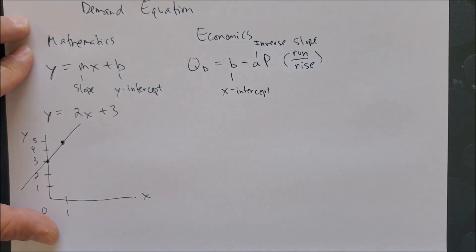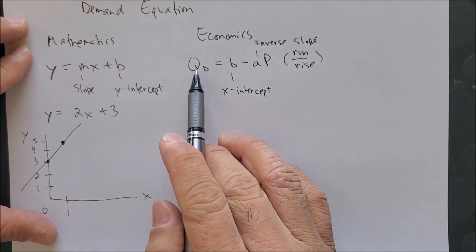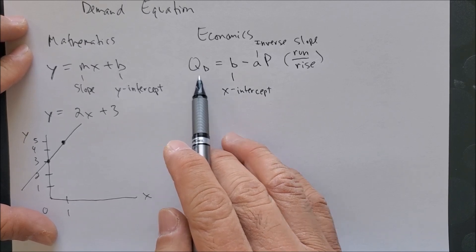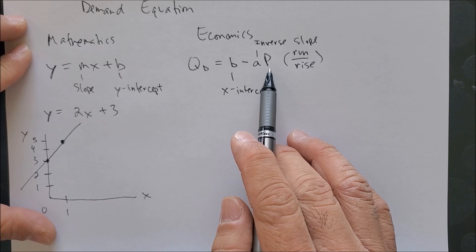Secondly, we also know that q on any economic graph is on the x-axis, p is on the y-axis.